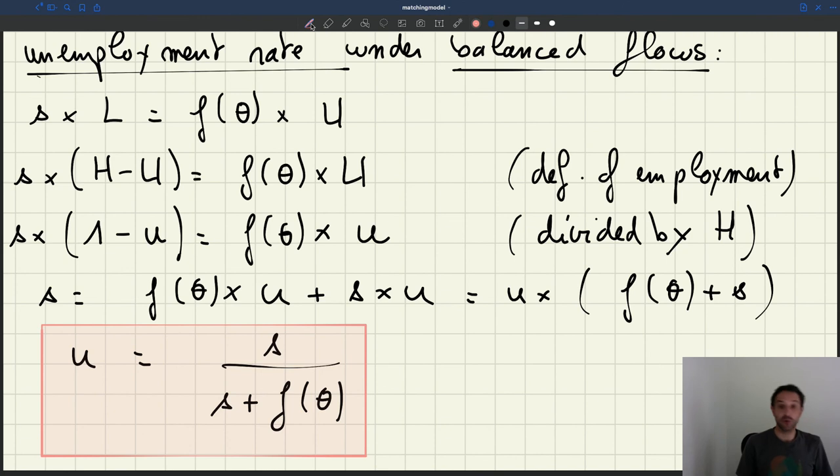And so in fact what you can do is that you can measure the separation rate S in the data, so just count how many people leave their job every month. You can compute the job finding rate in the data, how many people find a job, and then you can compute S divided by S plus F of theta, and you get some measure of the unemployment rate.